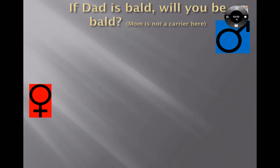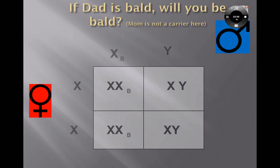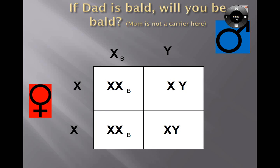Mom is a carrier here. This Punnett square is going to demonstrate when mom is a carrier of male pattern baldness. I've tagged the X trait with a little letter B next to the letter X — that's the X that helps us make a female. Dad is on top with X and Y, and mom has the two X's. When the first box is filled in, it will be two X's and a lowercase b; the box beneath it is two X's, a lowercase b, and Y — a 50/50 chance of having that specific trait.